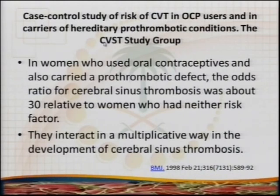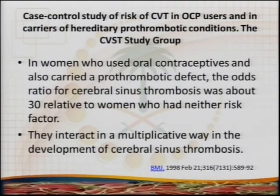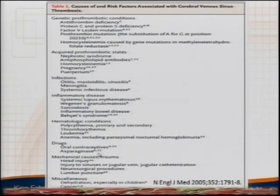This case-control study shows the risk of CVT in OCP users combined with thrombophilia. We divide thrombophilia into weak versus severe. Weak or minor thrombophilia — such as heterozygous Factor V Leiden mutation — increases thrombosis risk two to fivefold on its own. But if combined with oral contraceptive pills, the interaction is multiplicative, increasing the risk of cerebral vein thrombosis to 35 times. There are also genetic and acquired thrombophilias, and infectious causes such as otitis media, mastoiditis, sinusitis, and inflammatory diseases.